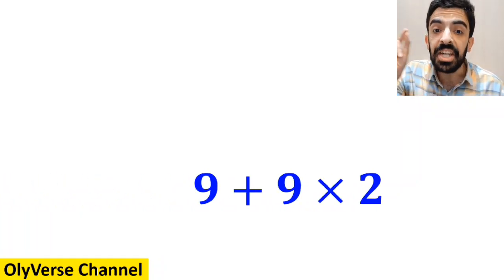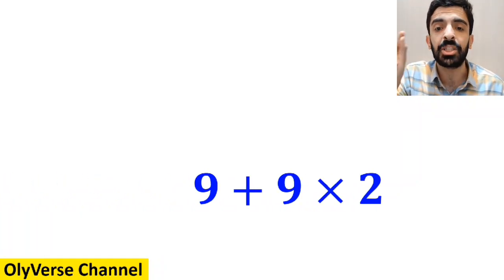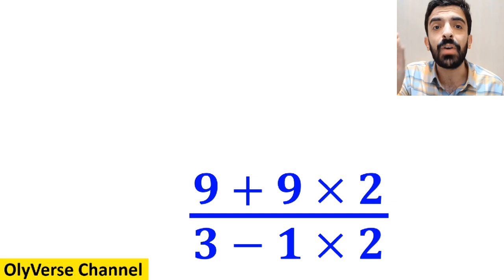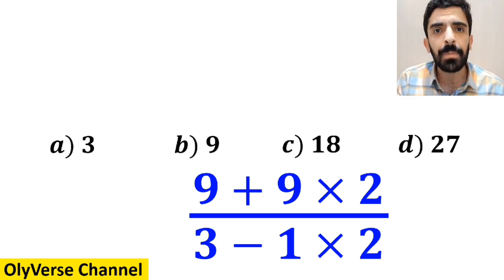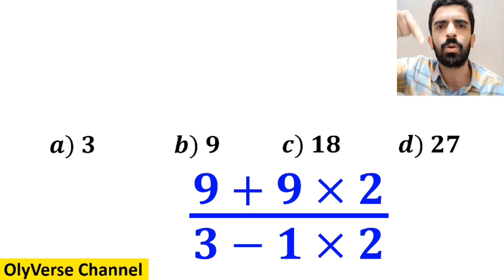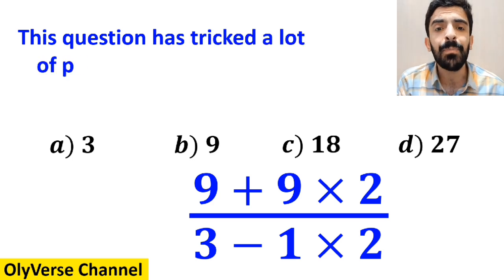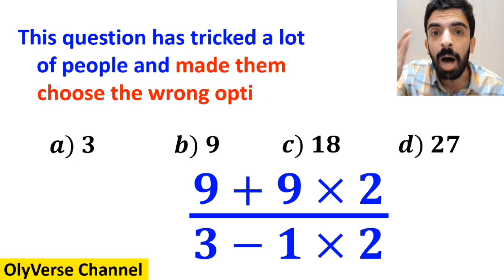What is the value of the expression 9 plus 9 multiplied by 2 over 3 minus 1 multiplied by 2? Which option do you think is the correct answer to this question? This expression has tricked a lot of people and made them choose the wrong option.